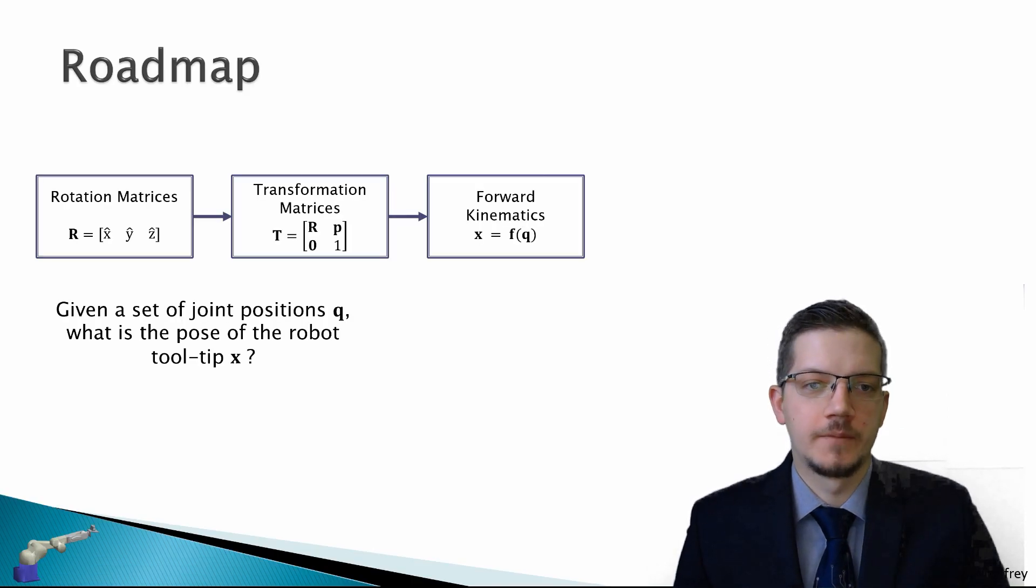So here's our roadmap. We learned about rotation matrices, then we put rotations to combine with translation to get transformation matrices, and now we're getting to forward kinematics.